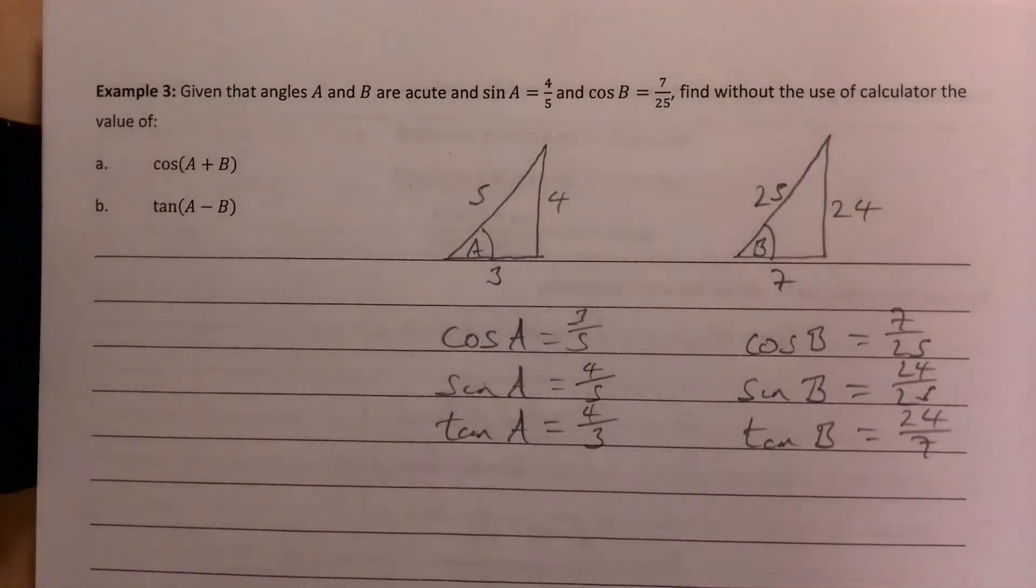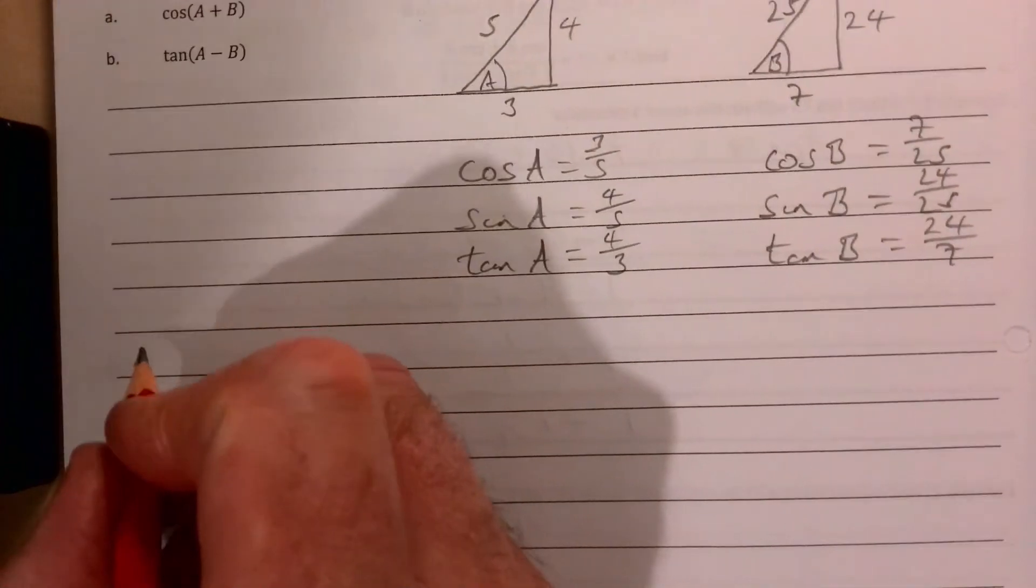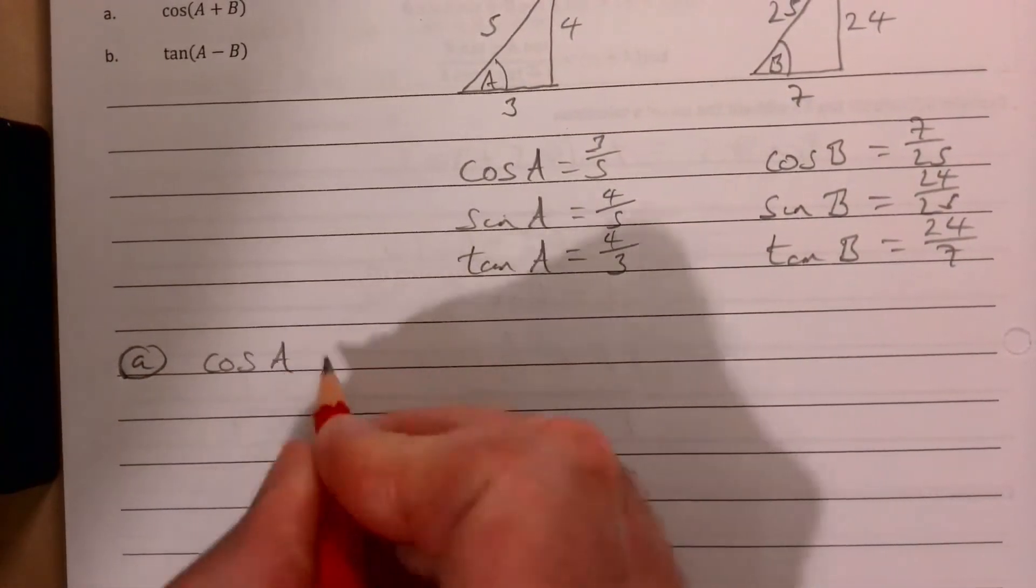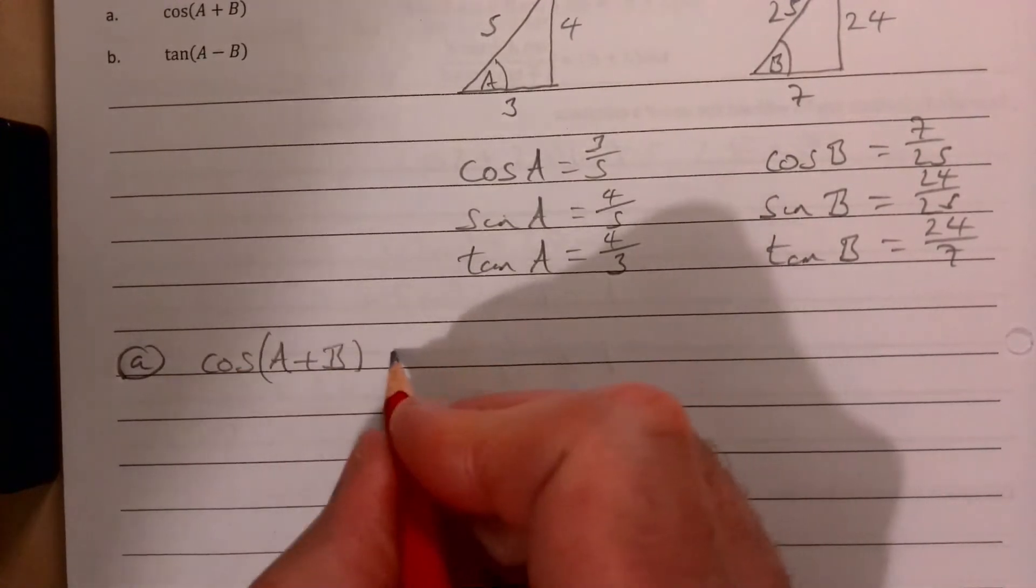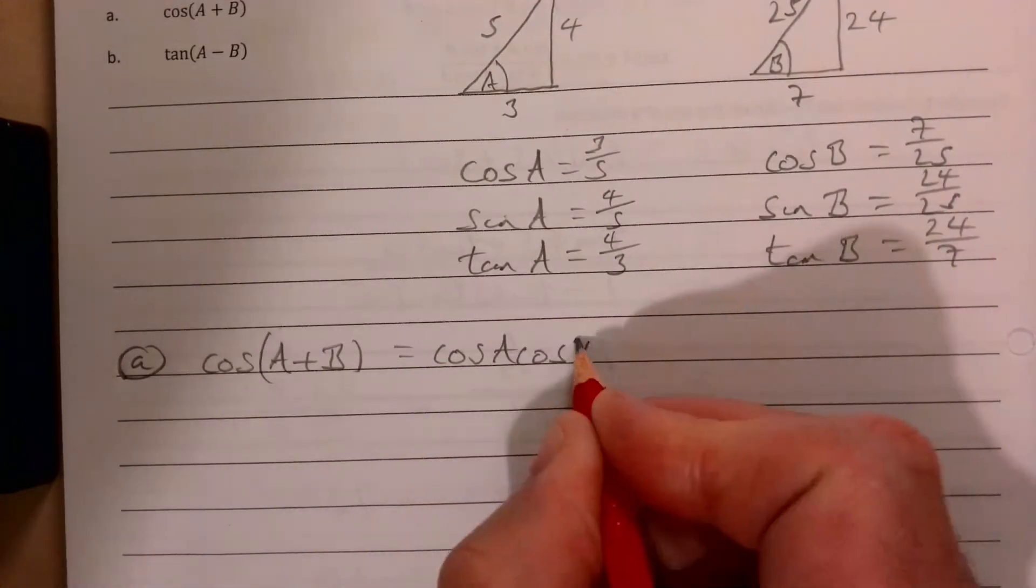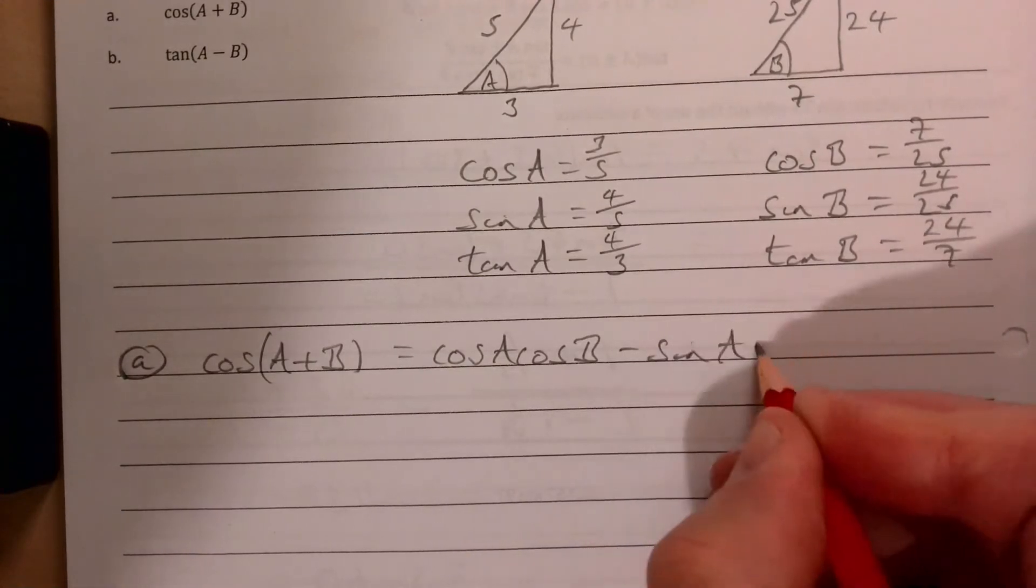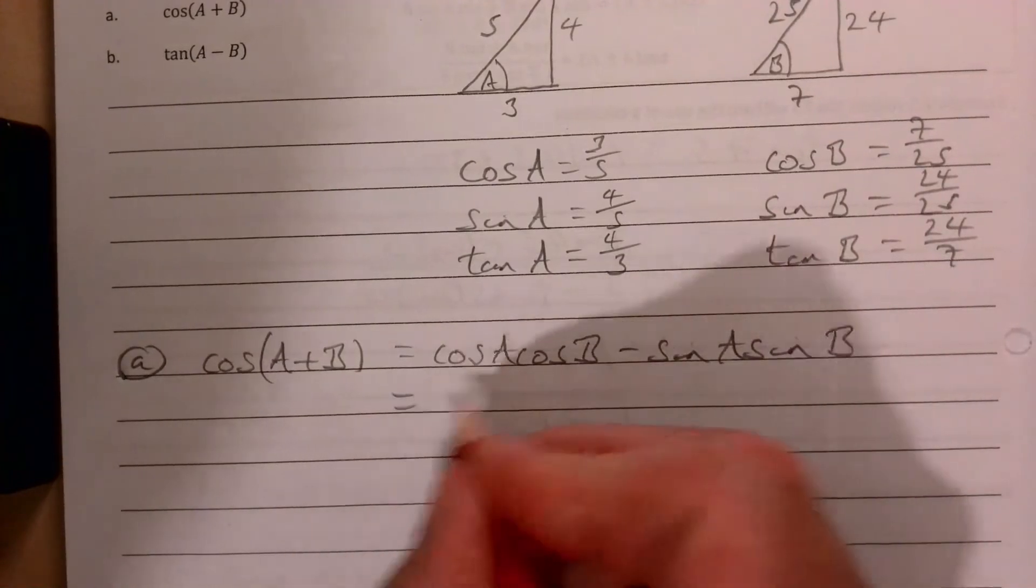So what do they want us to work out? Cos(A+B) is our first one. Our formula of course is cos A cos B minus sin A sin B. Fill in our blanks: cos A is 3/5 multiplied by 7/25.